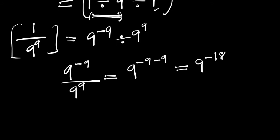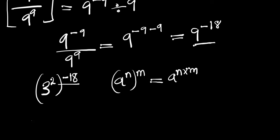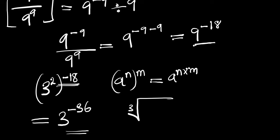Now we can reduce this. 9 is a perfect square, so we can write 9 as 3 to the power of 2, and this is all to the power of negative 18. We make use of the identity: if you have a to the power of n, all to the power of m, this equals a to the power of n times m. So let's multiply this out, and this gives us 3 to the power of 2 times negative 18, which is negative 36.